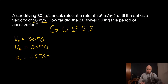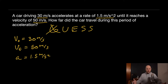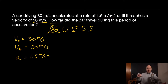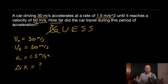Next, the Unknown: the question asks 'how far did the car travel?' — that's a change in position, or Δx, marked with a question mark because we don't know it yet. That completes the U step.